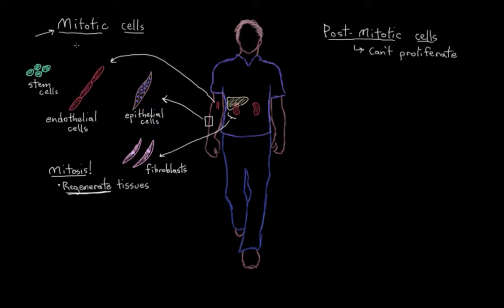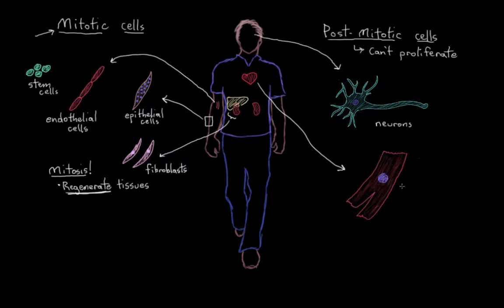They certainly have a limited ability to repair or regenerate the tissues that they're a part of. Some examples would be neurons, either within the brain or elsewhere in your nervous system, and heart muscle cells. These are both examples of post-mitotic cells.